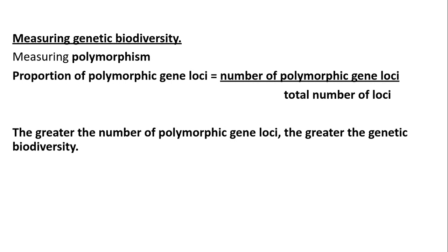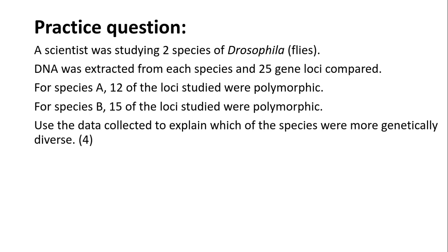The equation we need to know is: the proportion of polymorphic gene loci equals the number of polymorphic gene loci divided by the total number of loci. We're going to look at some examples of this.